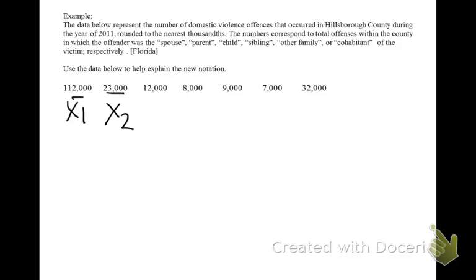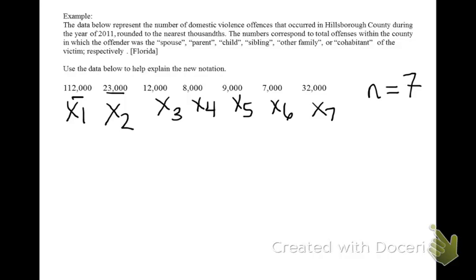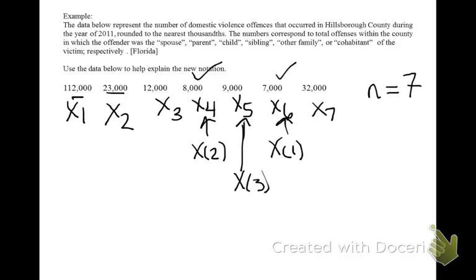We could talk about them in terms of order. The first observed was spouse, x1. The second observed was parent, x2, and so forth. So there are seven observations. That tells us our sample size, n equals 7. Another thing that may be more useful would be to talk about them in terms of order. So the smallest number here would be 7,000 — that's x parenthesis 1. The next smallest number would be 8,000 — that's x parenthesis 2. The next smallest number, 9,000 — that's our third ordered observation. And if I continue in this process, we'll find that the order goes like this.